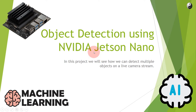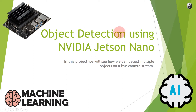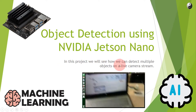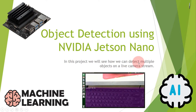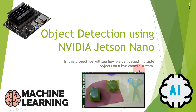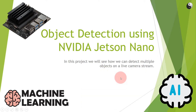Hi guys, welcome to Mac2Explorer YouTube channel. Today we are going to see a new machine learning and AI artificial intelligence based project: object detection using NVIDIA Jetson Nano. In this project we will see how we can detect multiple objects on a live camera stream. So let's get started.